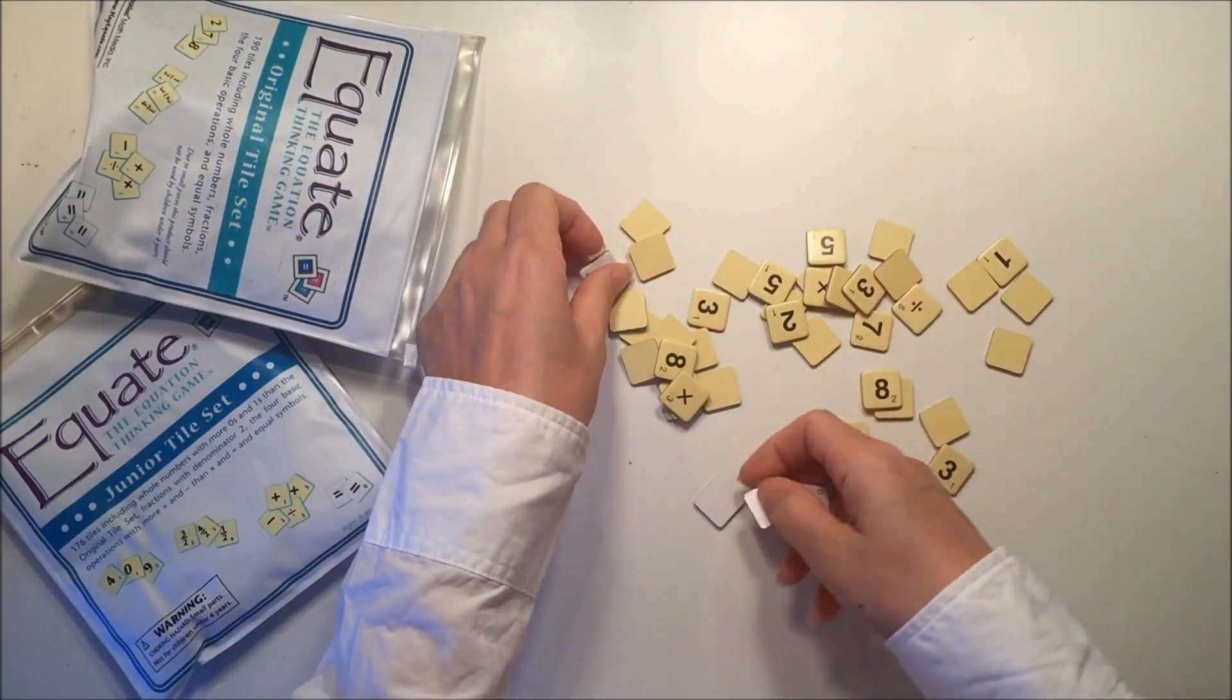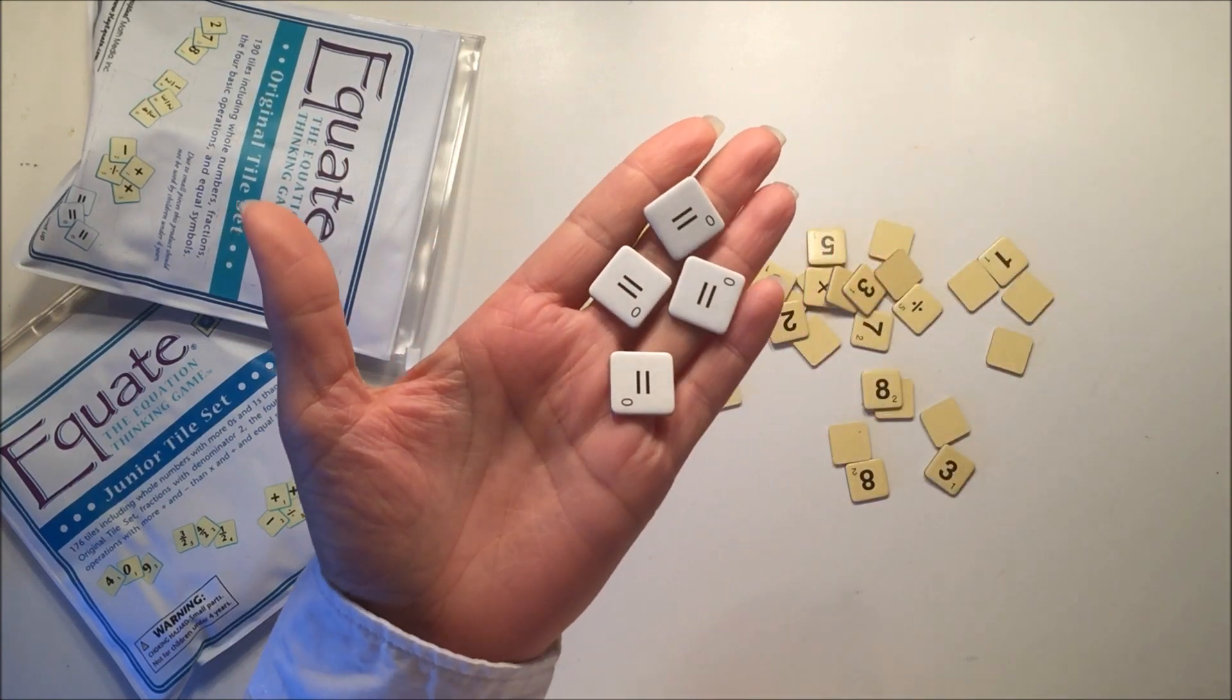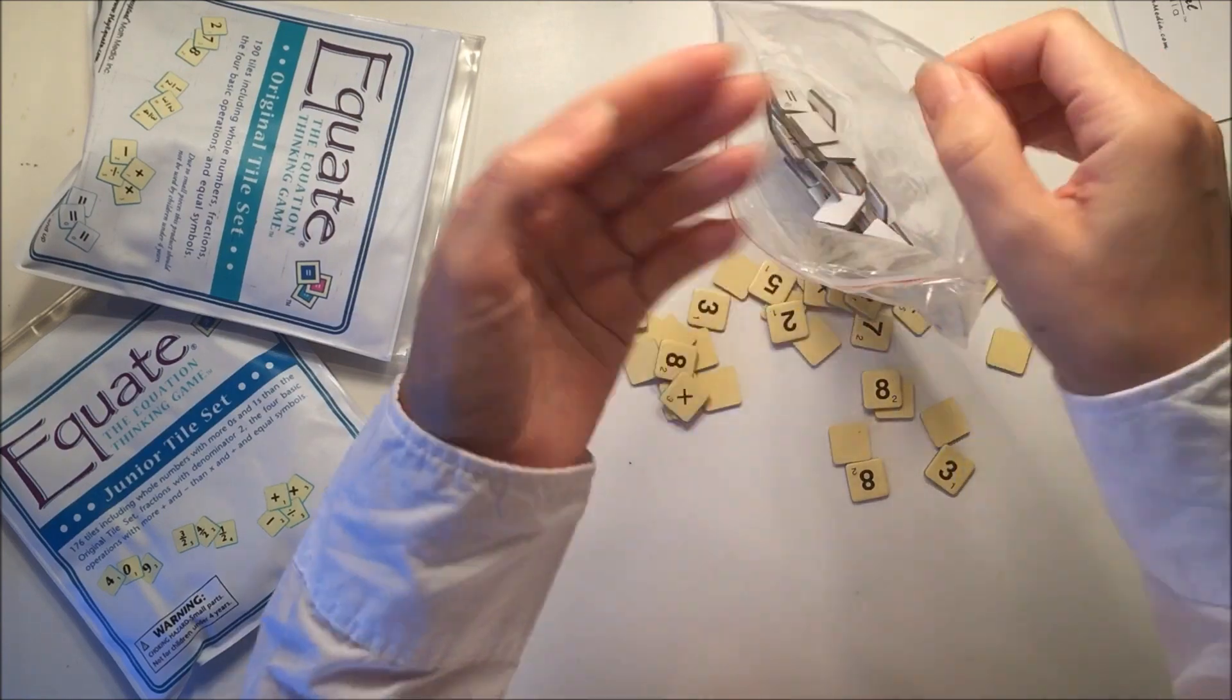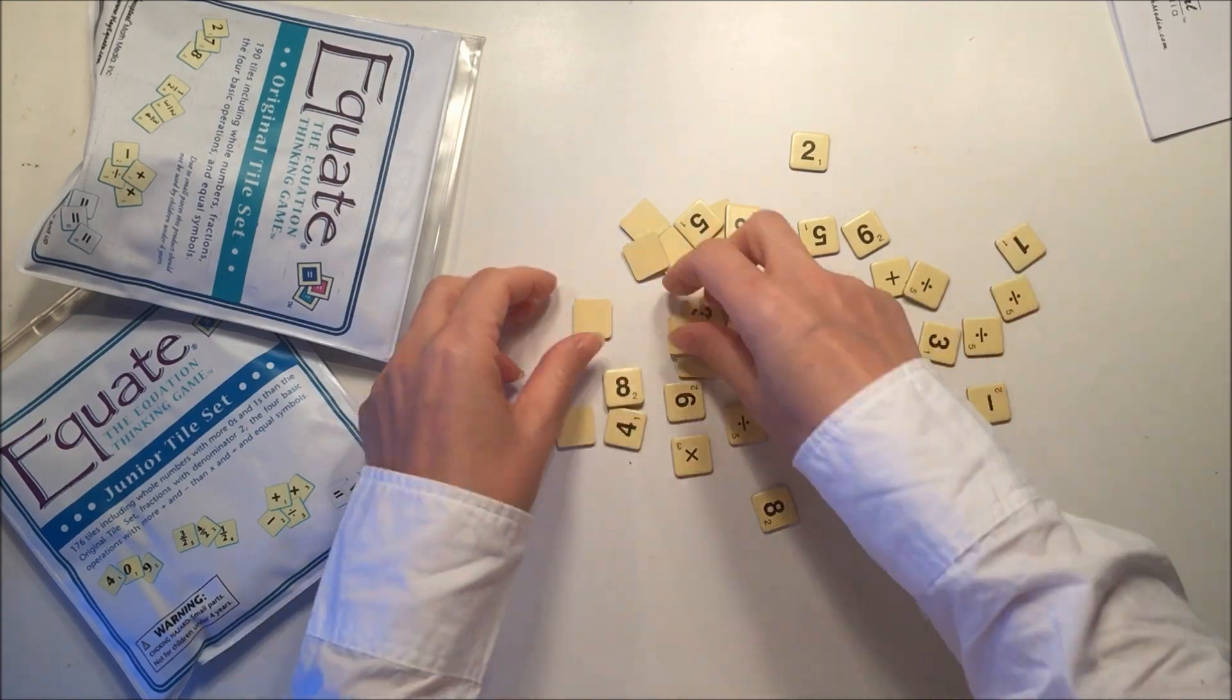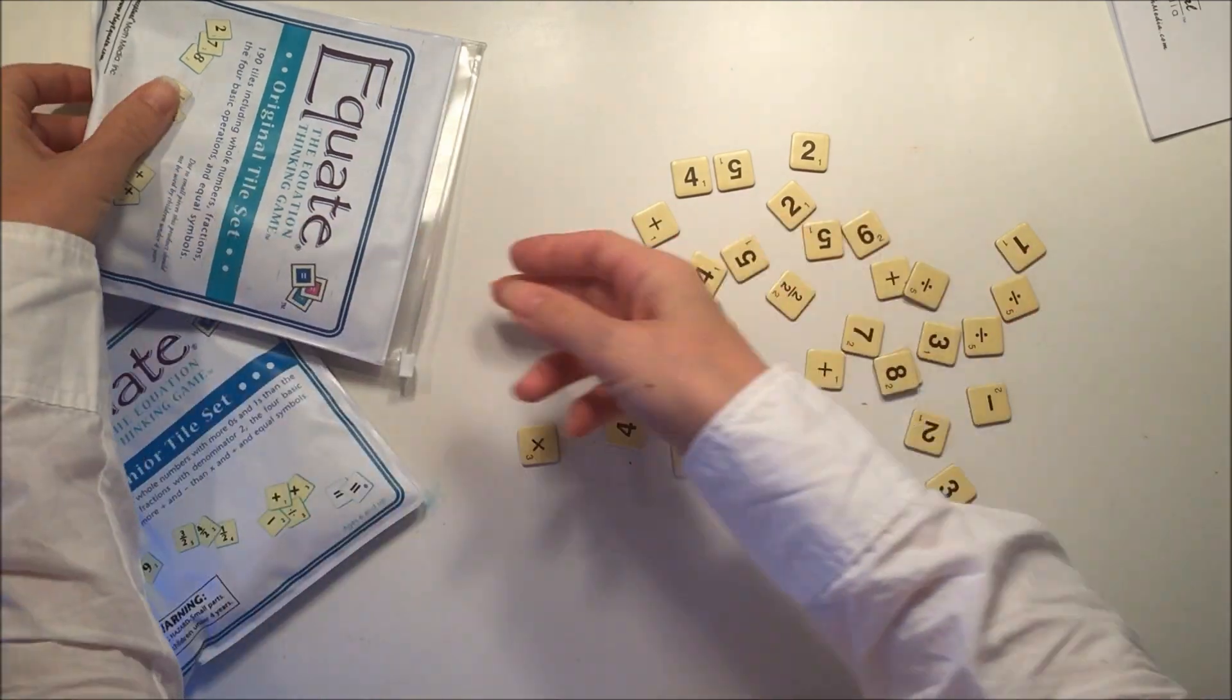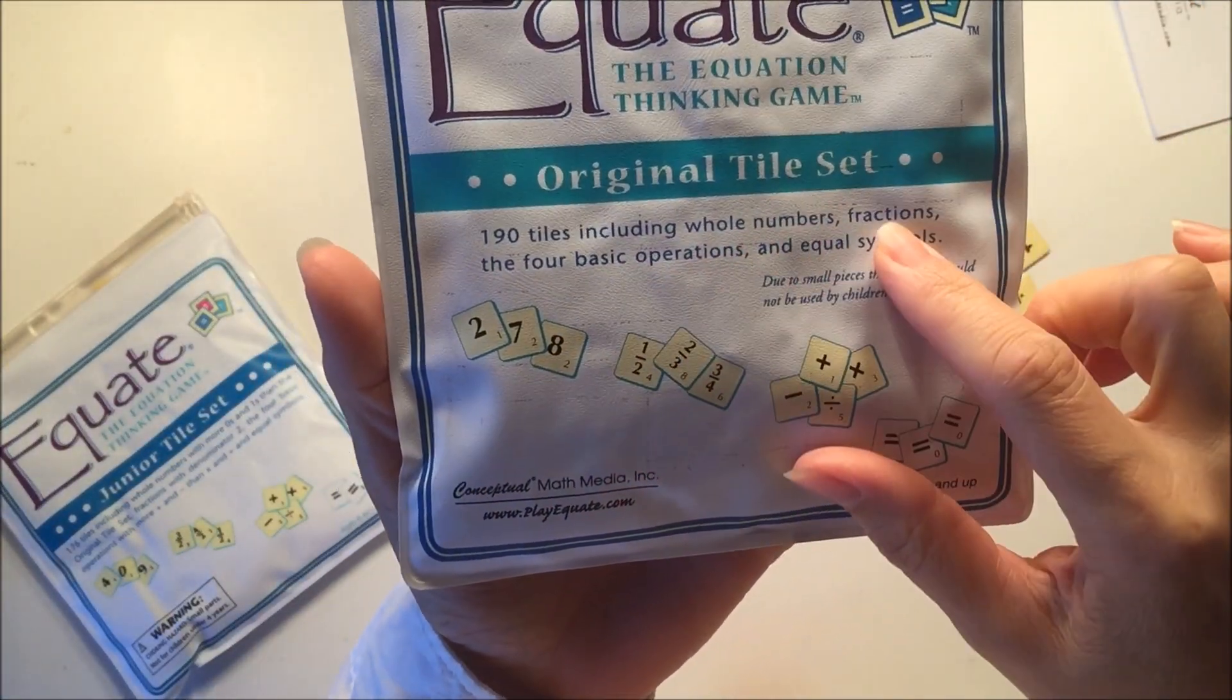I'm going to show you some of these tiles that come in the original set. These white equate signs don't have any value so you just pull them as you need them, but you may only use one in each equation. It comes with a lot of whole numbers and the operation signs are addition, subtraction, multiplication, and division.